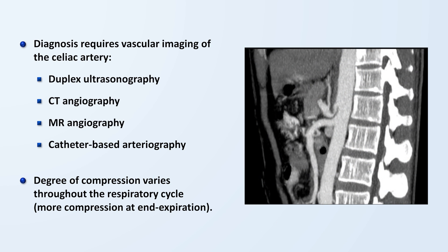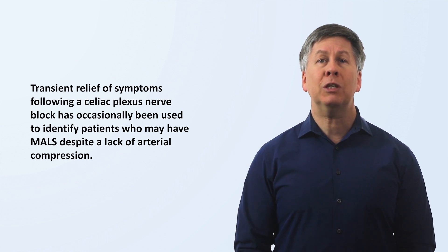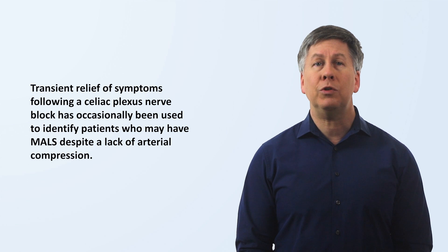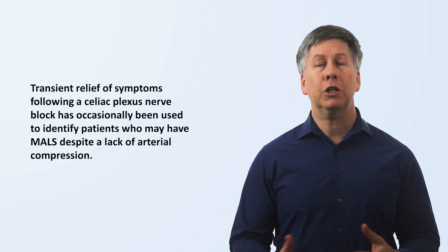Here's a CT angiogram showing the compression of the celiac artery as it leaves the aorta — it's even more evident on a 3D reconstruction. Notably, despite having a seemingly objective way to identify the presence of MALS, owing to its rarity, it is still considered somewhat a diagnosis of exclusion. Before a patient can be diagnosed, they typically need not only positive evidence of the diagnosis but reasonable evidence that more common explanations for postprandial pain are not present. This may include imaging of the gallbladder and pancreas, upper endoscopy, and maybe even a gastric emptying study. More recently, the transient relief of symptoms following a celiac plexus nerve block has occasionally been used to identify patients who may have MALS despite a lack of arterial compression, highlighting the hypothesis that MALS symptoms are driven primarily by nerve compression or other nerve dysfunction rather than ischemia.